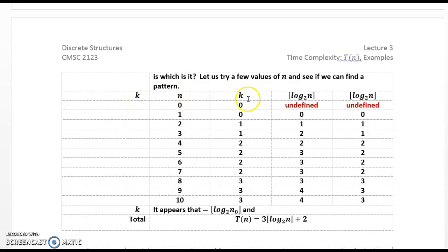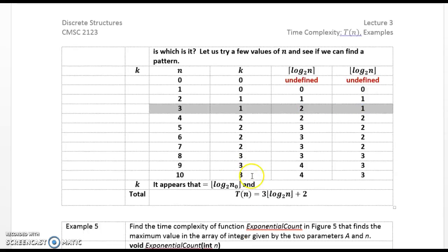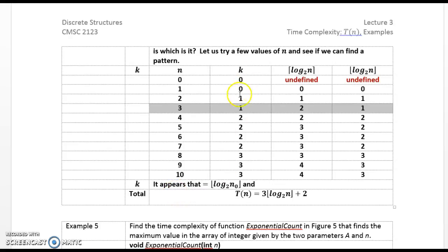So here's the value of k, here's n, 0, 1, 2, 3, 4, 5, 6, 7, 8, 9, 10. When n is 0, the log 2 is undefined. When k is 2, then both the ceiling and floor are 1. When k is 3, the ceiling is 2 and the floor is 1, and so on. So our various k seems to track the floor value here rather than the ceiling. So it appears that k is equal to the floor of log 2 n sub 0.